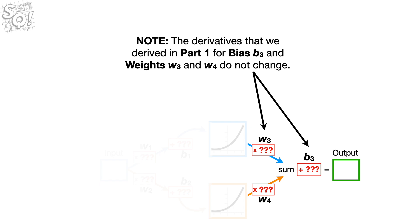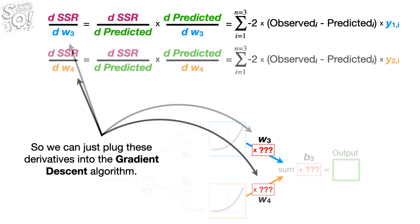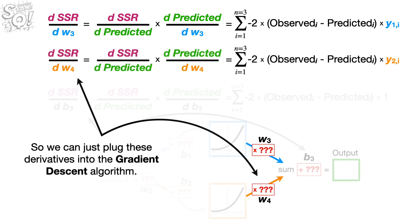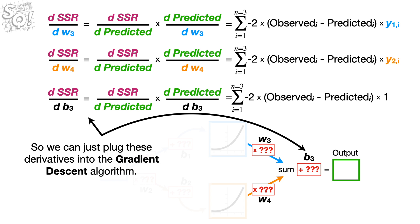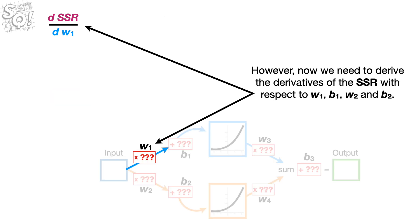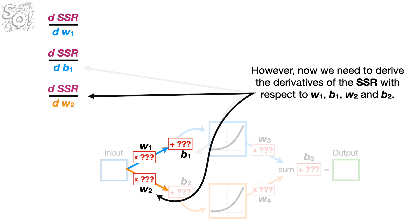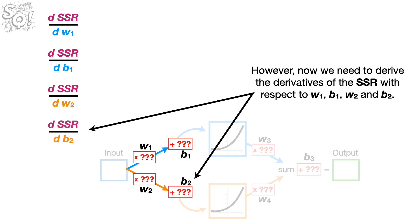Note, the derivatives that we derived in Part 1 for bias B sub 3 and weights W sub 3 and W sub 4 do not change. So we can just plug these derivatives into the Gradient Descent Algorithm. However, now we need to derive the derivatives of the sum of the squared residuals with respect to W sub 1, B sub 1, W sub 2, and B sub 2.